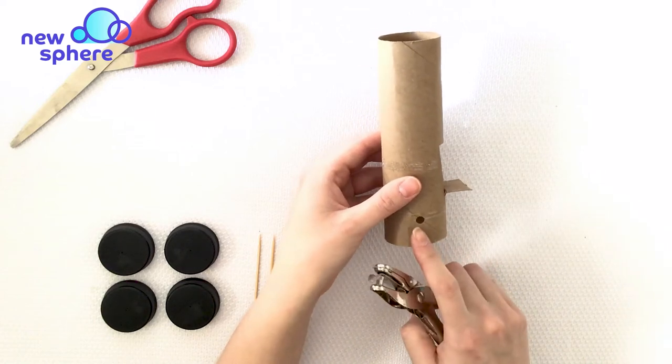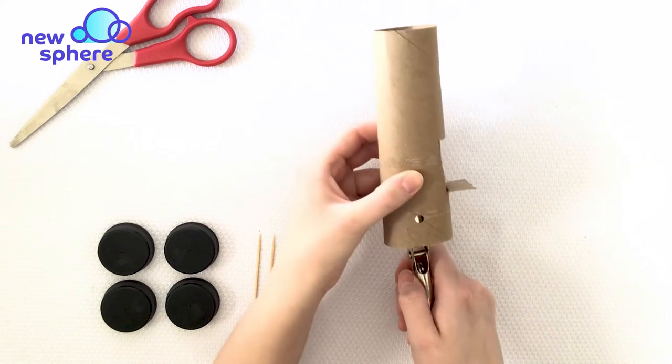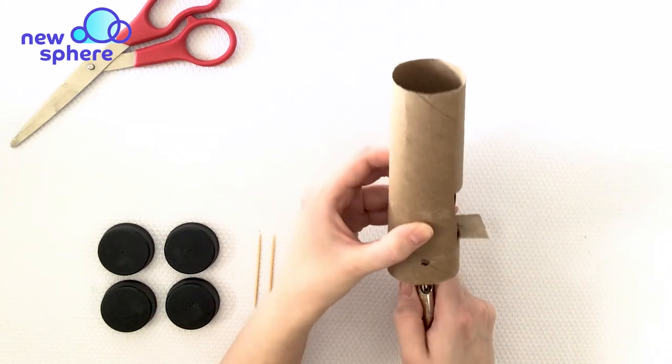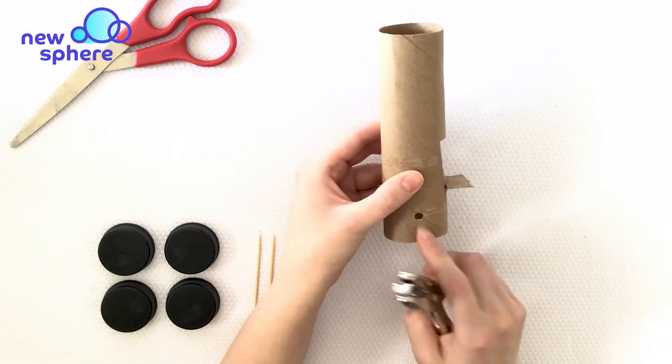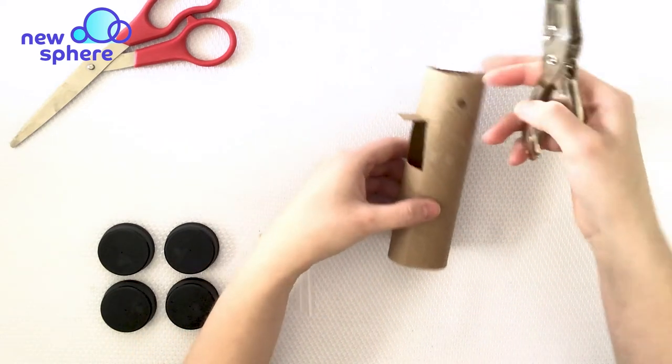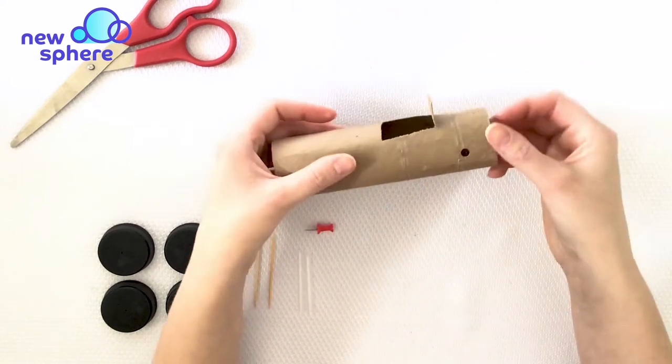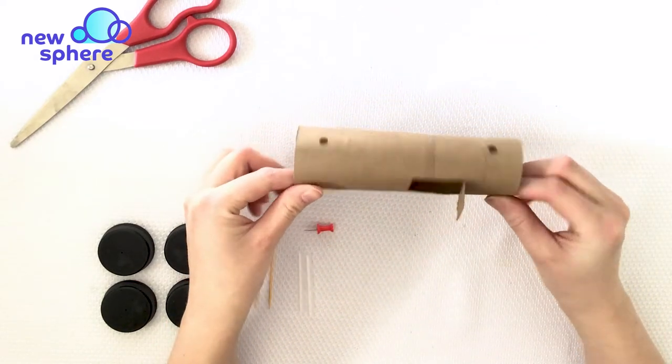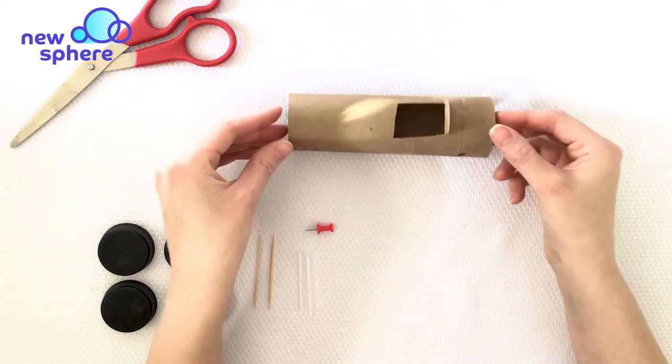I found that it's easiest if you pop one hole and then look through that hole to line up the hole punch on the other side. You can also use your craft knife if you don't have a hole punch. Now we have four holes in our cardboard tube towards the bottom. Now we're ready to create our axles.